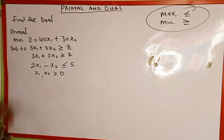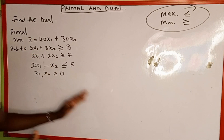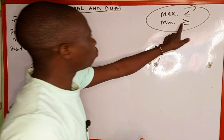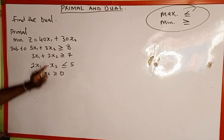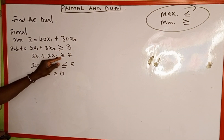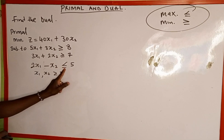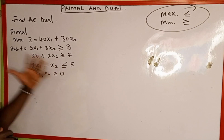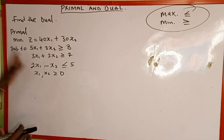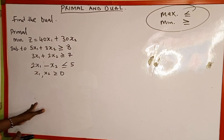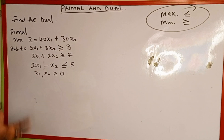So if you look at this given primal, it's a minimization form, so we expect all the constraints to be greater than or equal to. If you look at the first equation, it's greater than — it's balanced. The second equation is greater than — also balanced. But the third equation is less than, which is unbalanced. So the first thing we are going to do is to write this in the correct format before we find the dual.